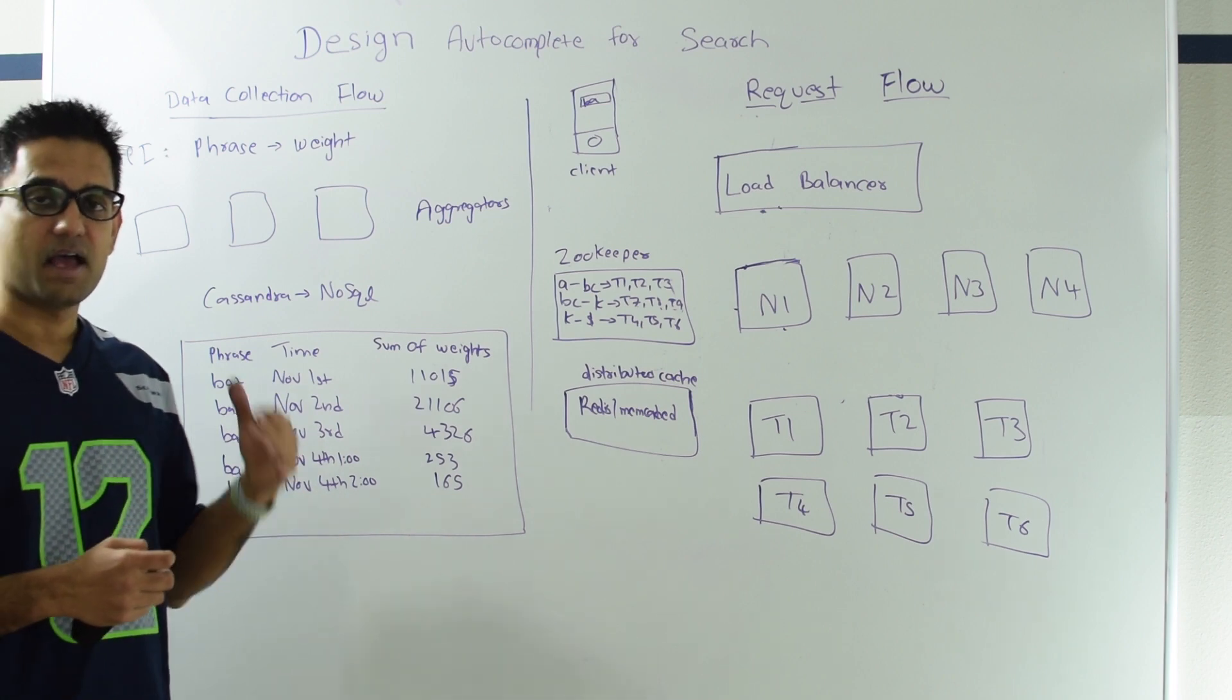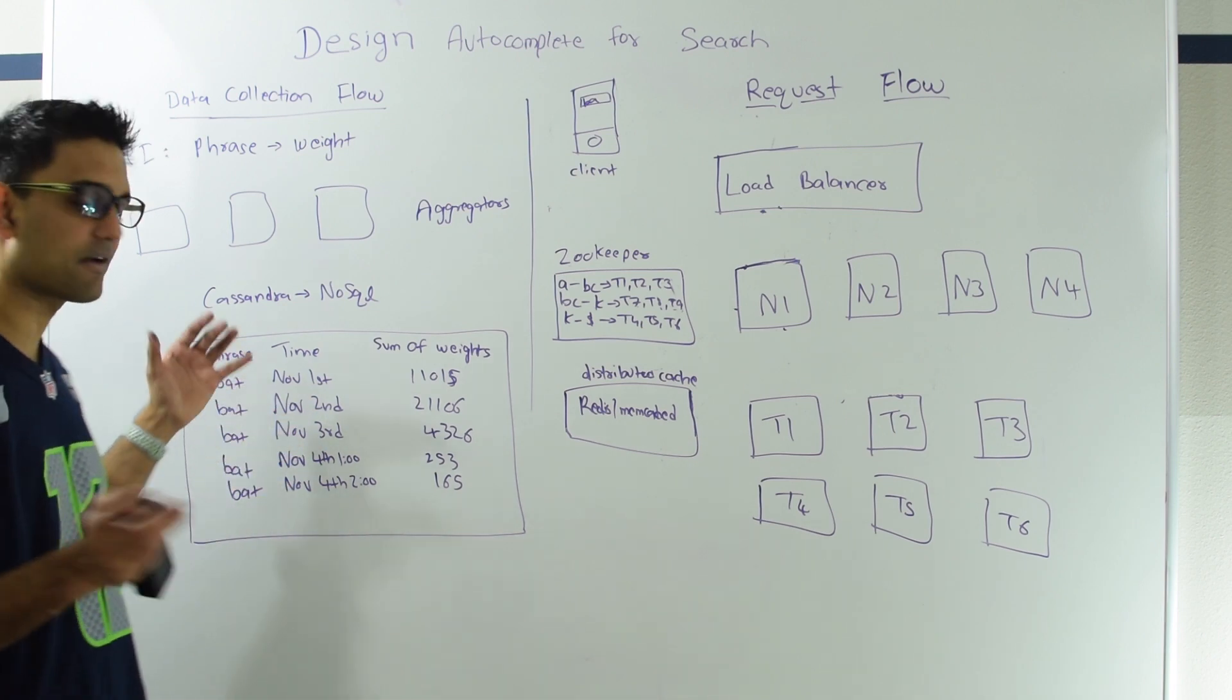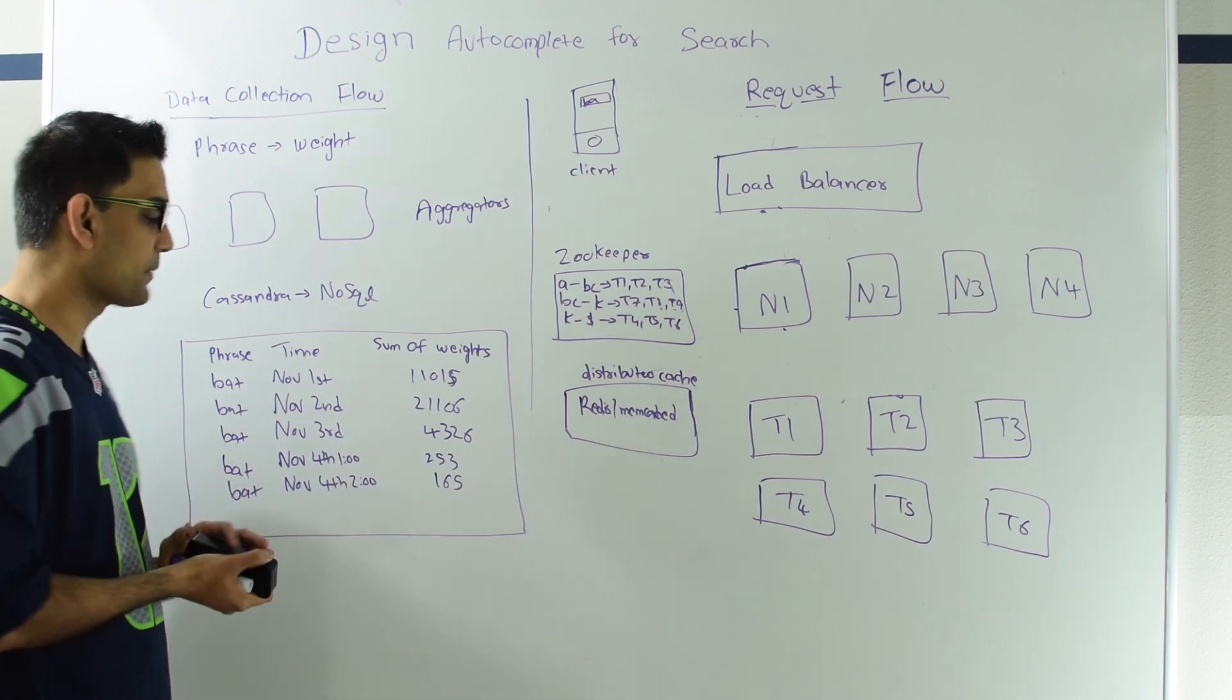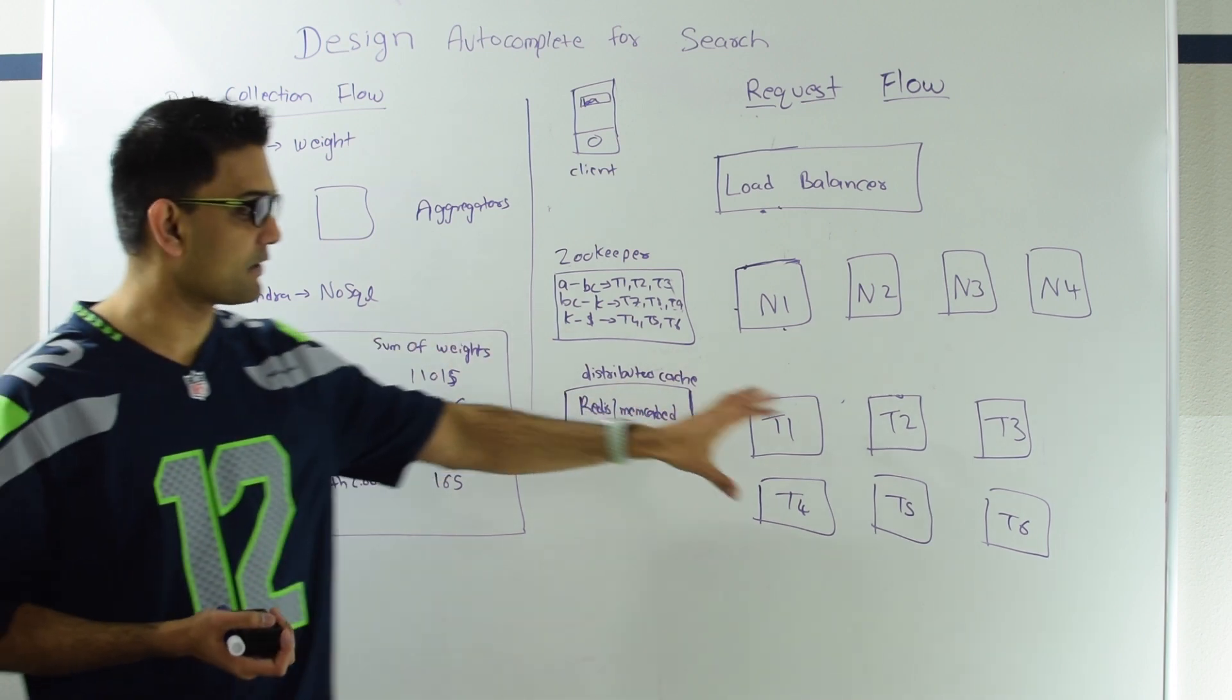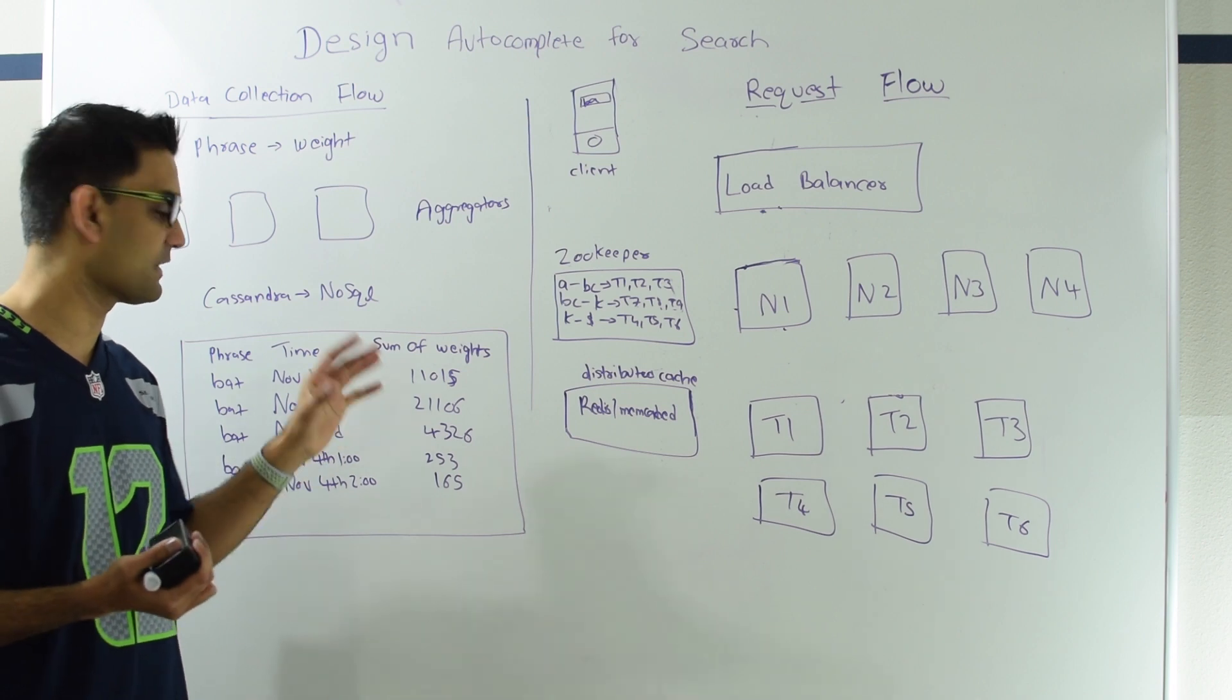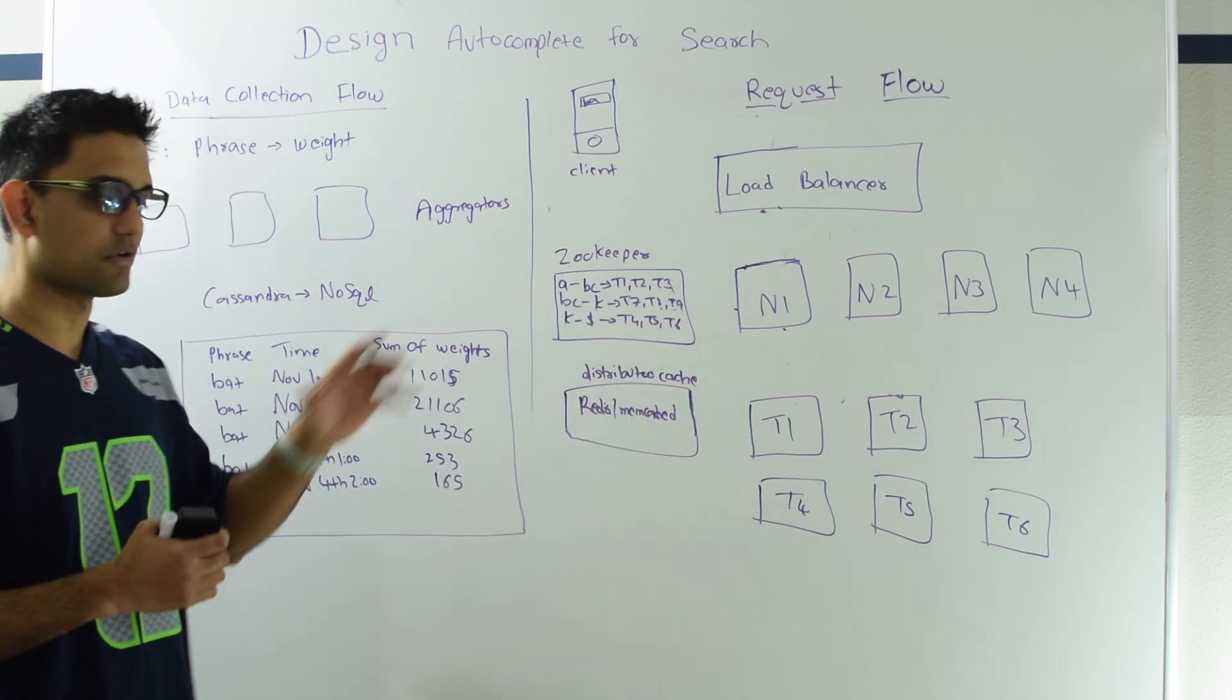After the current day passes, as an optimization, we can aggregate all this hourly data and create a daily data. So as you can see, before November 4th, for November 3rd, 2nd, and 1st, we aggregated all that hourly data and got a sum of their weights and converted into daily data. We can do bunch of optimizations here. First, we can lose the data older than certain number of days if that's not important for our autocomplete feature. Second, if a phrase has less weight, if the sum of their daily weights or hourly weights is less than some number, then we can get rid of that phrase altogether because we know that phrase is not going to show up in our autocomplete result.